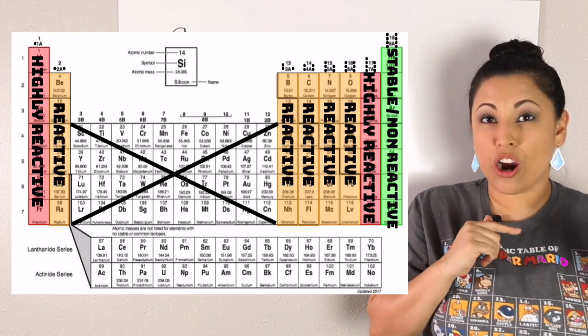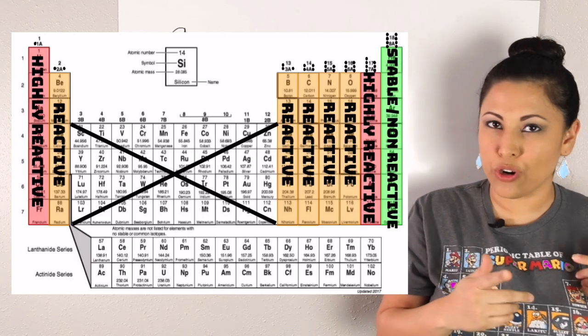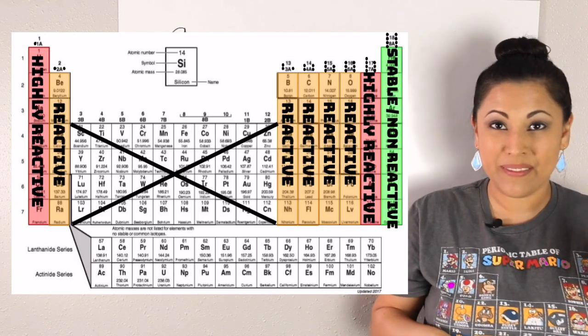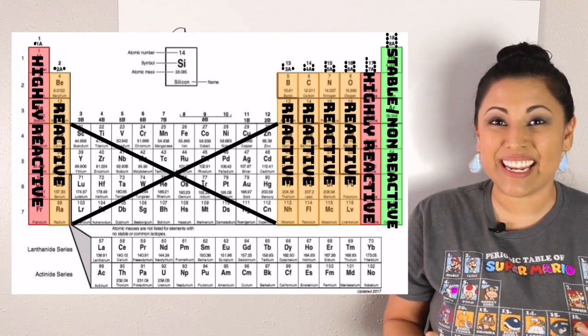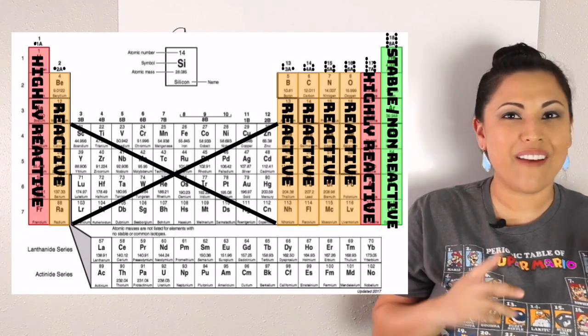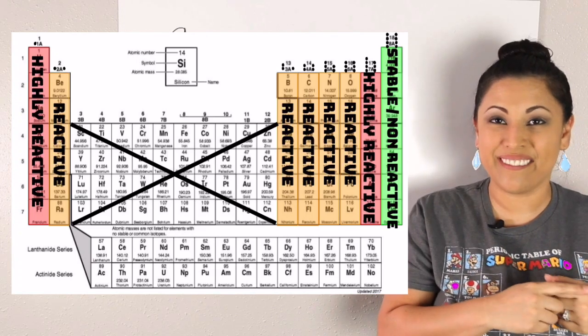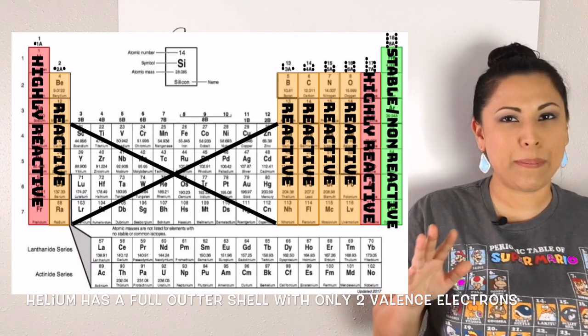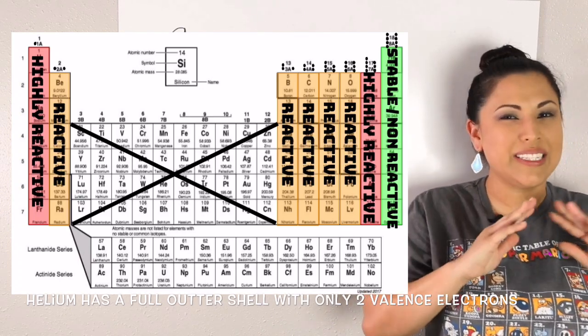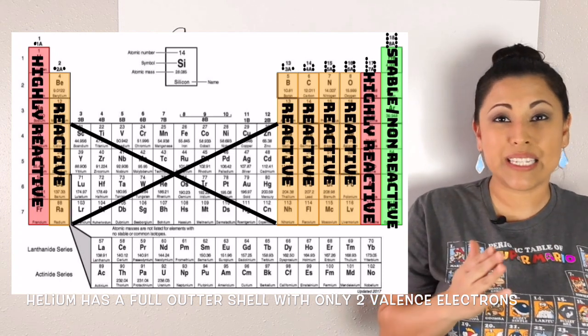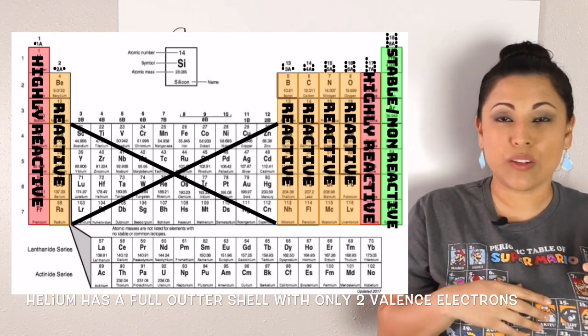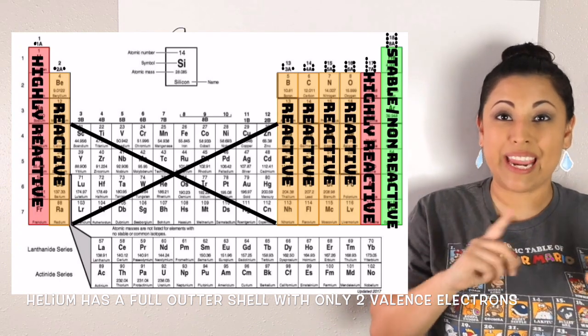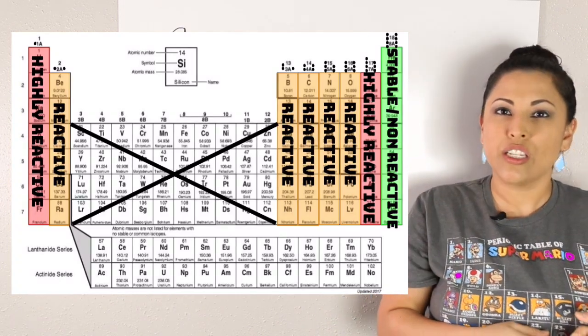Let's take a closer look. If you notice, our stable or non-reactive group is group what? Can you see that number at the top? Group 18. And how many valence electrons does group 18 have? Exactly, eight. That means it's in its happy place. It's chill, it's stable, it's hanging out because it doesn't need anybody else. It doesn't want to react with anyone else because it has a full outer shell, which means eight valence electrons.